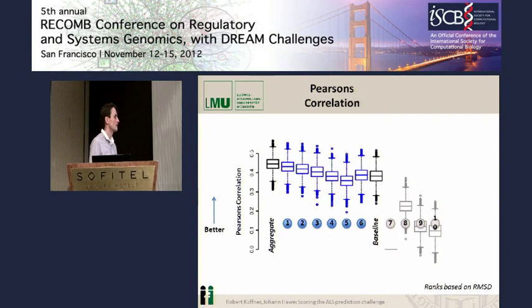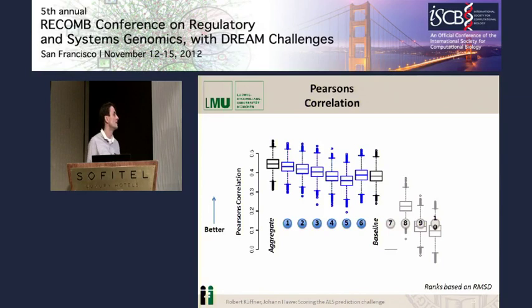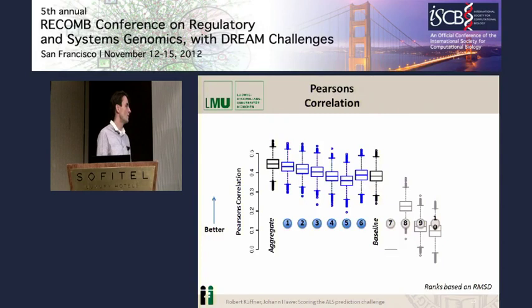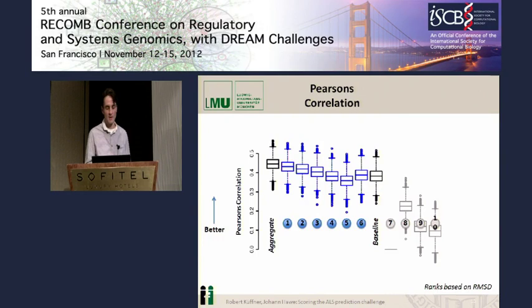Looking at Pearson's correlation — a relative measure where larger values are better — the picture is consistent. The better solvers are not significantly different from each other, but perhaps slightly better than in the RMSD slide. There's a large gap between the better and the not-so-good performers. Notably, solver number seven submitted the same value for each patient regardless of the data, and actually didn't perform as the worst.